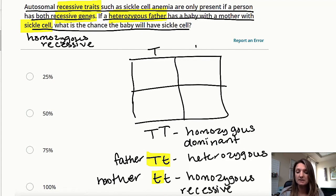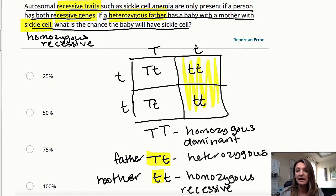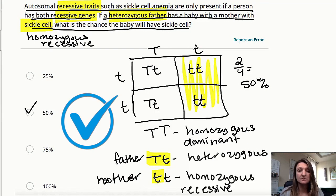Let's put these on a Punnett square. The father is big T, little t, and the mother is little t, little t. Filling in the square — bringing down big T across little t, and bringing down little t and little t — we see that two out of four potential offspring would have little t, little t. That gives us a 50% chance, which would be answer B.